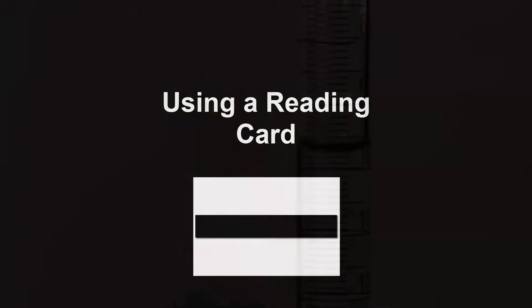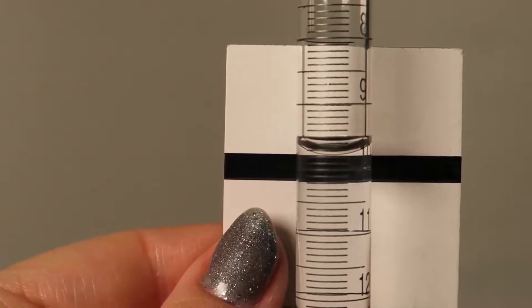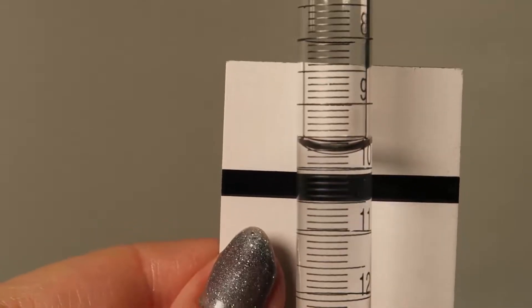Using a reading card. A reading card is used to sharpen the bottom of the meniscus to achieve more consistent readings. Notice how the bottom of the meniscus becomes darker and moves as the black line of the card is brought close.